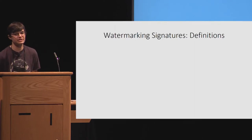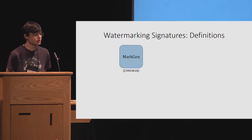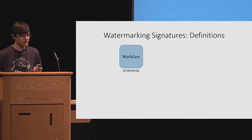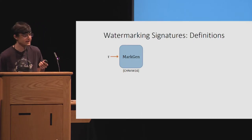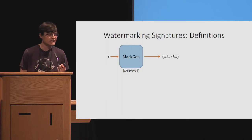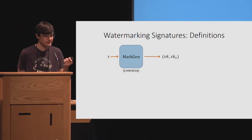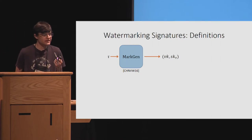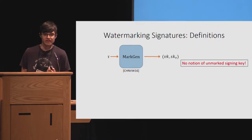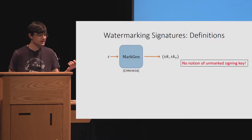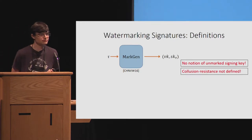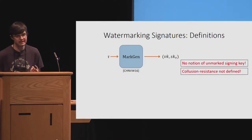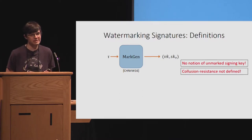I'm going to focus on the signatures aspect of the definitions. As defined in Cohen et al., there was a markgen algorithm — the keygen and mark algorithms were paired — so markgen took as input a tag tau and outputted a verification key and signing key tuple where the signing key is marked with tag tau. The issue with this definition is, first, there's no notion of an unmarked signing key — the signing key is generated when this algorithm is given a tag tau, so in this diagram there's only a marked signing key. And collusion resistance is not defined, because the signing key is only generated when given a tag, so it isn't possible to generate many marked versions of the same signing key with different tags.